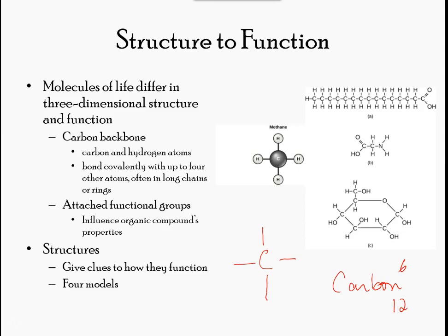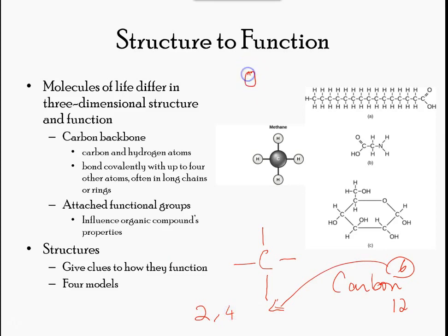Carbon contains four electrons in its outer shell; therefore, it can form four covalent bonds with other atoms or molecules. The simplest organic carbon molecule is methane, CH4, in which four hydrogen atoms bind to a carbon atom.